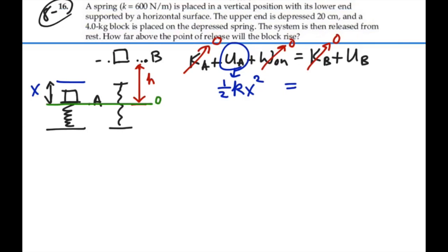And then at point B, the spring is sprung and will spring no more, so there's no potential energy due to the spring, but there is potential energy due to gravity, mgh. So that's what we have.